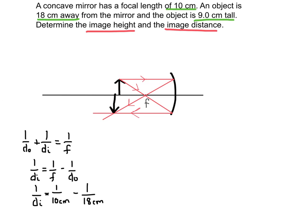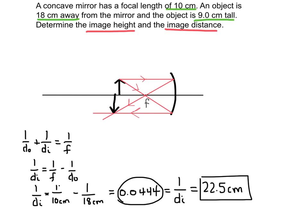Now I can literally just plug into my calculator if I want. 1 divided by 10. And then subtract that one from 1 divided by 18. And I would end up with 0.0444. And this is representing 1 over the image distance. So I would just need to take the inverse of this number right here. Or just take 1 divided by that number. And I'm going to get 22.5 centimeters. And that's going to be the image distance.